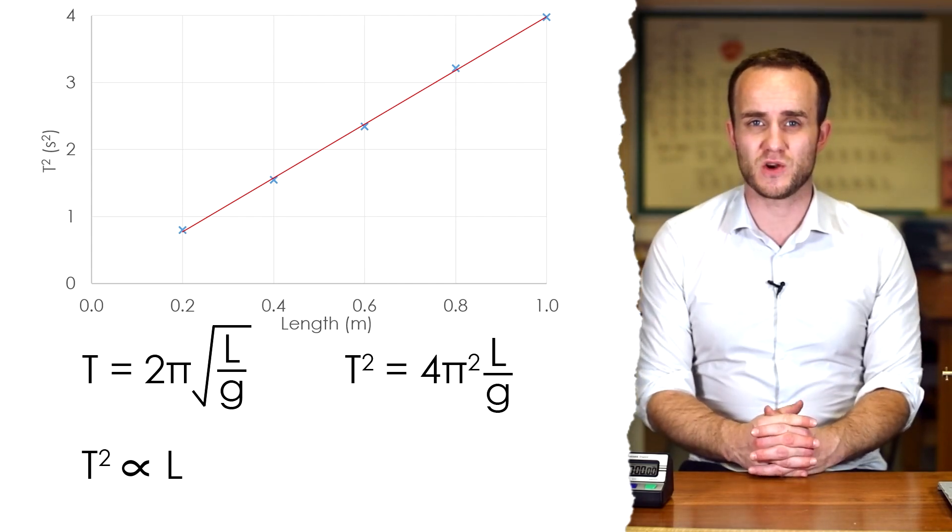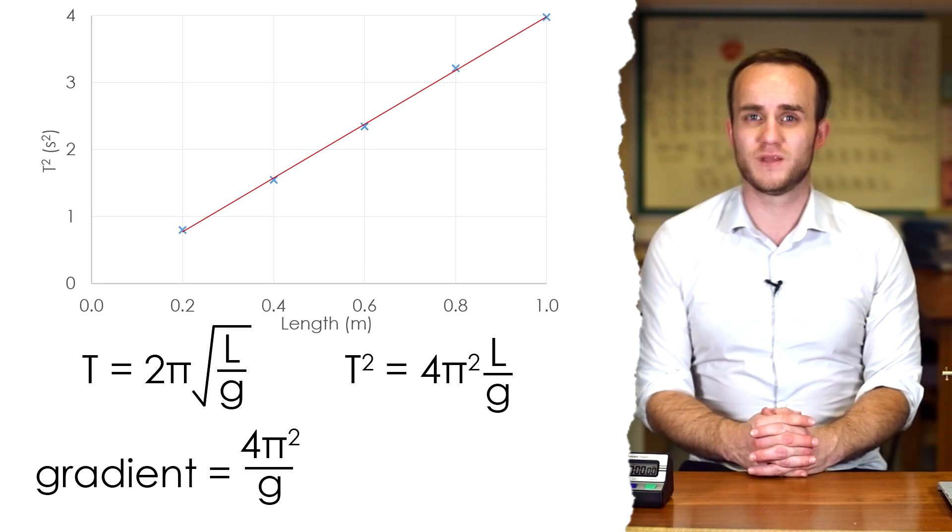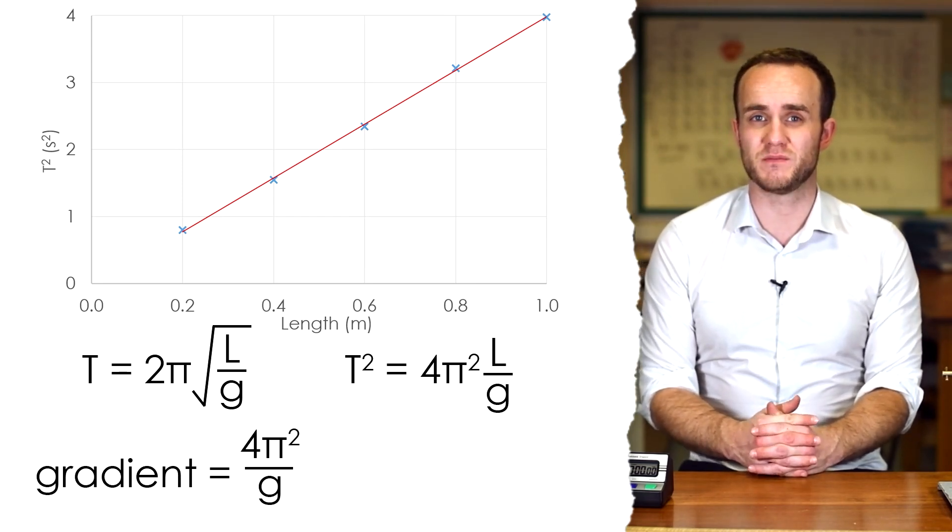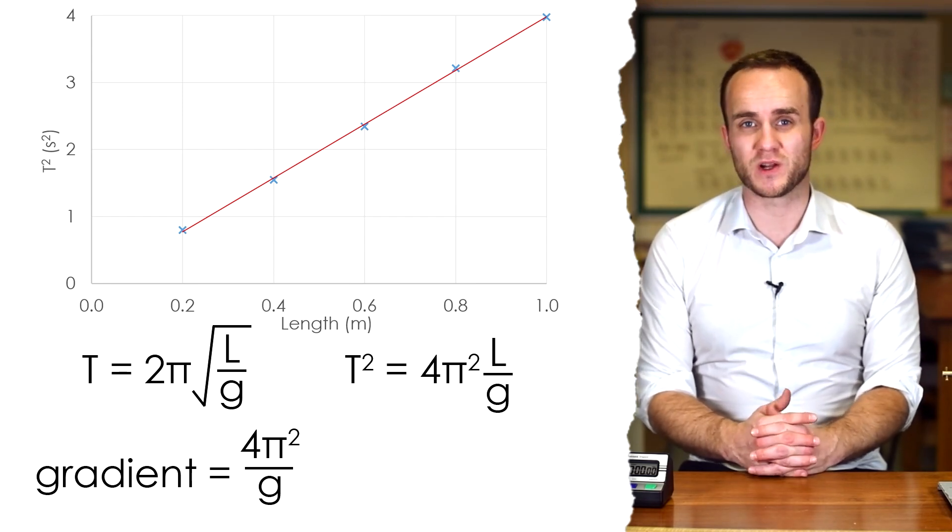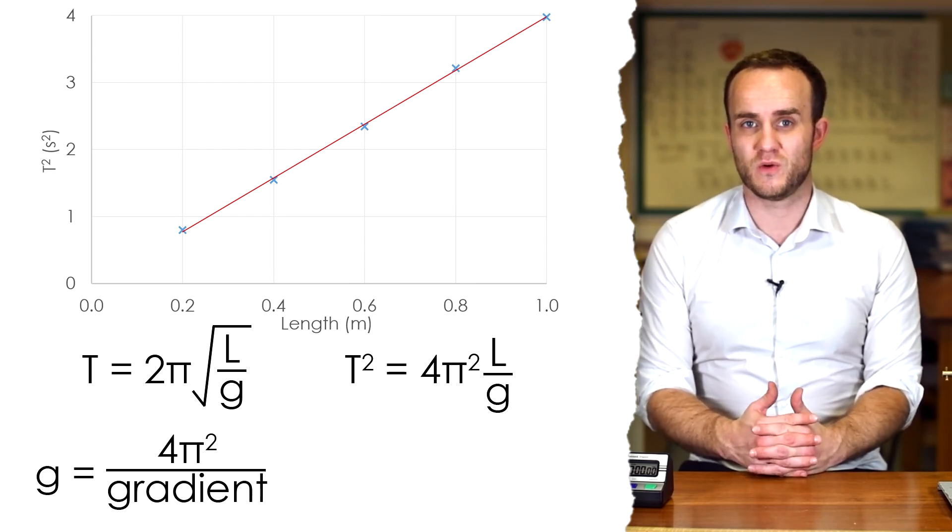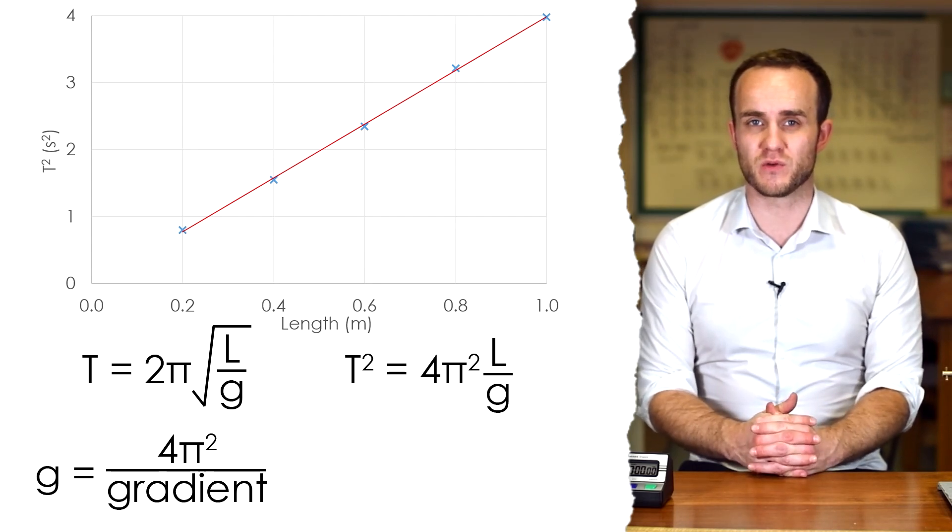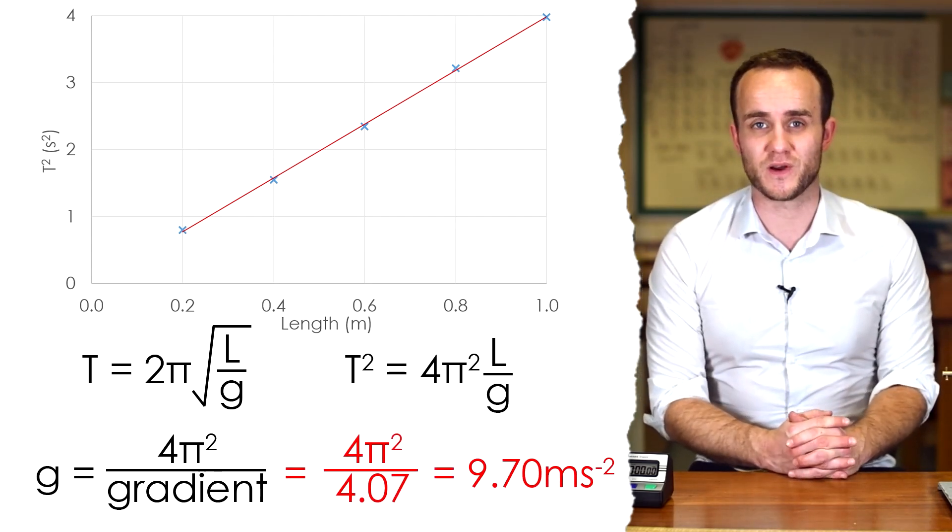Finding the gradient, that is equal to, according to the equation, 4π²/g. So what I can do is verify this relationship by finding g. Just swapping gradient and g over, we end up with g = 4π²/gradient. If I wanted to, I could find out the percentage error in that compared to the accepted 9.81 meters per second squared.